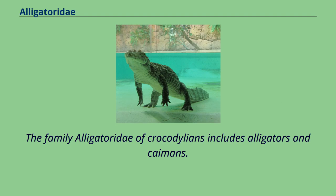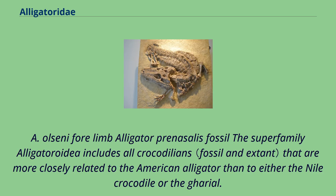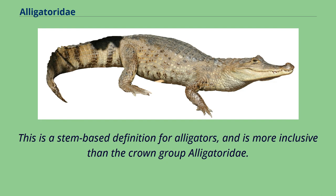The family Alligatoridae of crocodilians includes alligators and caimans. The superfamily Alligatoroidea includes all crocodilians that are more closely related to the American alligator than to either the Nile crocodile or the gharial. This is a stem-based definition for alligators and is more inclusive than the crown group Alligatoridae.